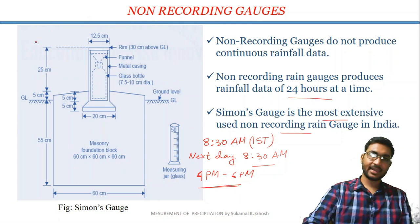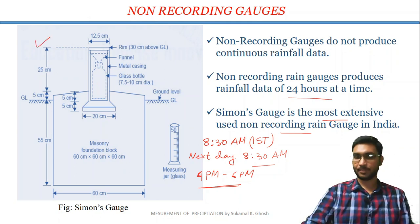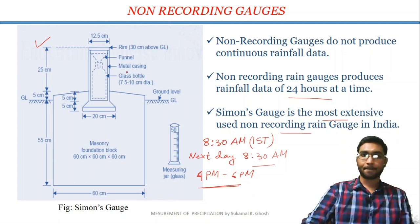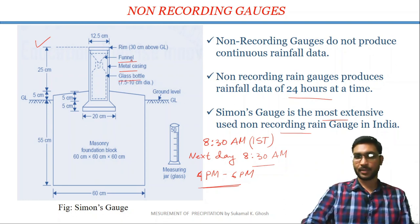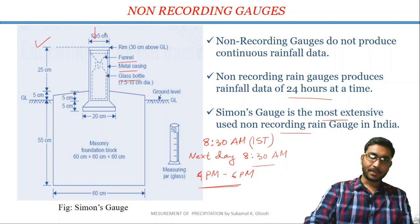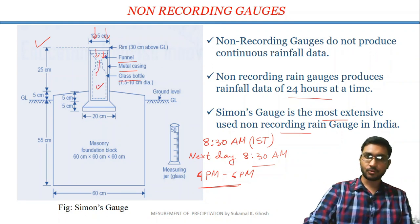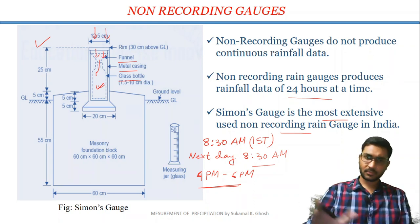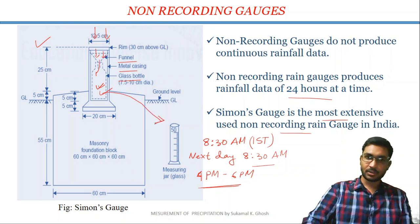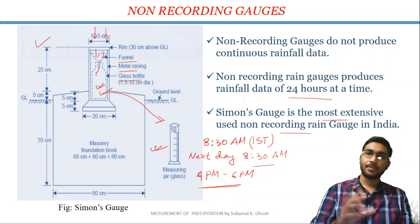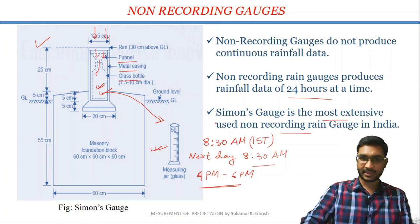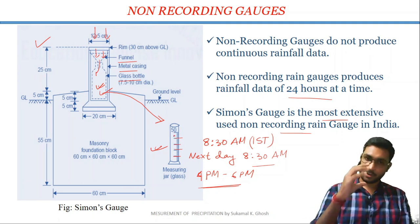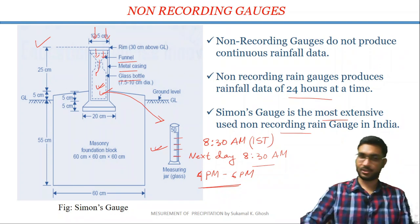This is a schematic diagram of Simon gauge. A Simon gauge consists of a metal container, a glass bottle, and a funnel. When precipitation occurs, through this funnel the precipitation or rainfall comes into this bottle. When we go to the rain gauge station every day at 8:30 AM, we collect the rainfall from this bottle and pour it into this measuring glass. We note down the depth of the rainfall because the measuring glass is marked, and from this marking we can calculate the depth of the rainfall or precipitation.